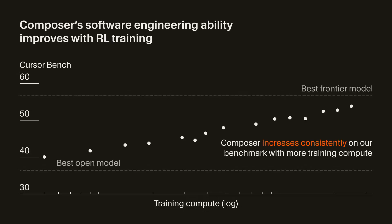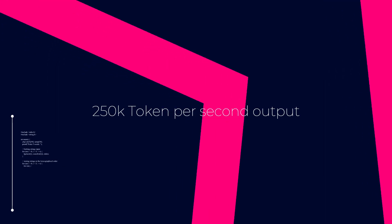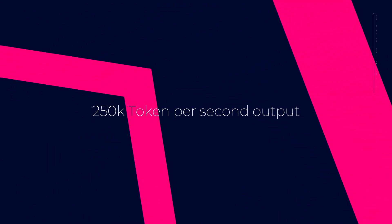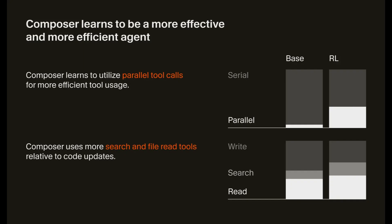They've positioned it as a frontier coding model with top-tier intelligence that seems to surpass its peers. It comes with a 250 tokens-per-second output speed, which is roughly twice as fast as most coding models and about 4 to 5 times faster than some reasoning models.